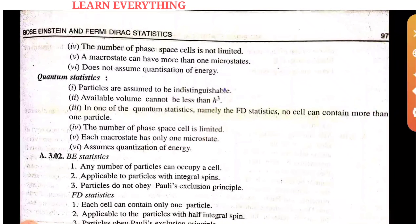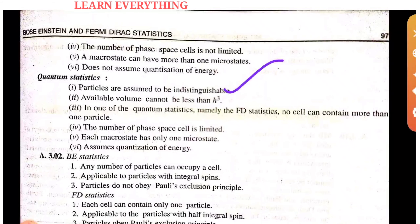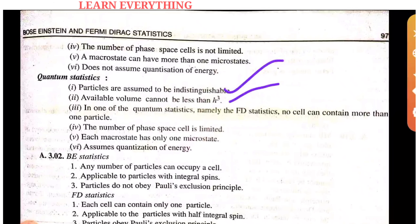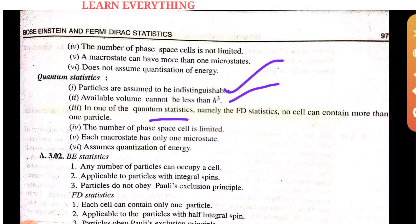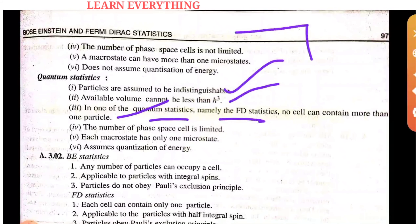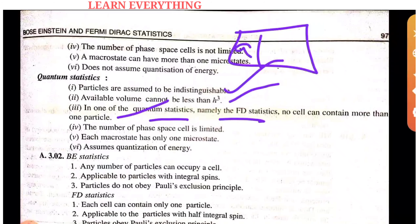In quantum statistics, particles are indistinguishable. The available volume is less than h-cubed. One type of quantum statistics states that no cell contains more than one particle, and the number of phase-space cells is limited.